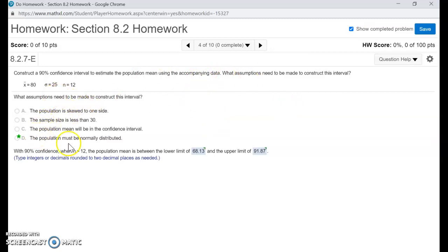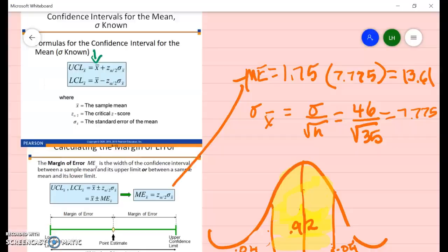So we're going to assume in order to make a confidence interval that the population must be normally distributed. So what we're going to do now is do a confidence interval. We have a 90% confidence.